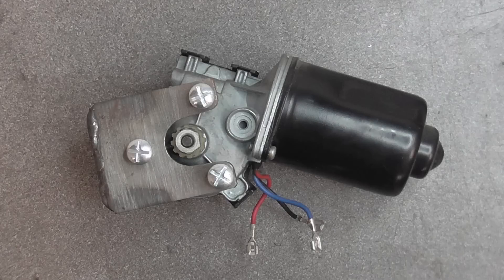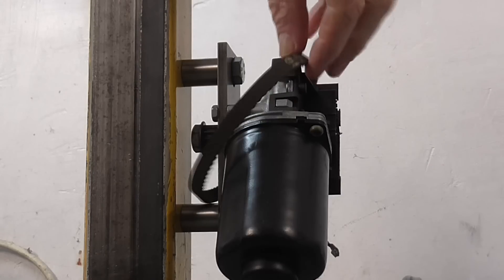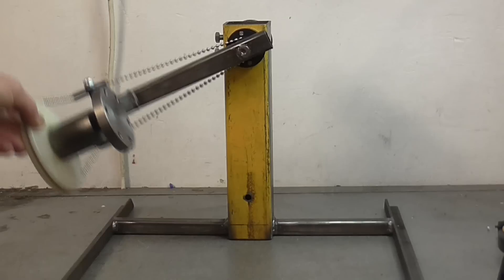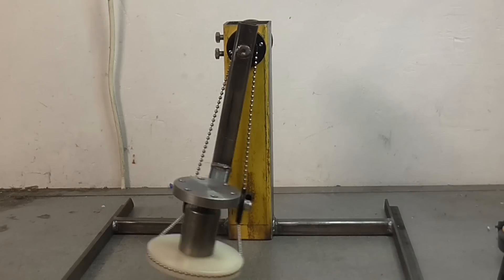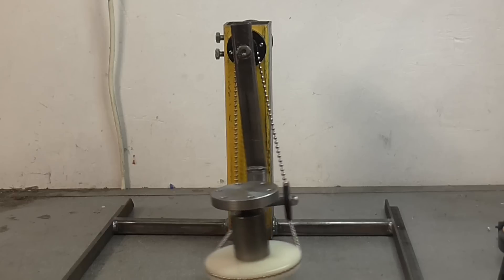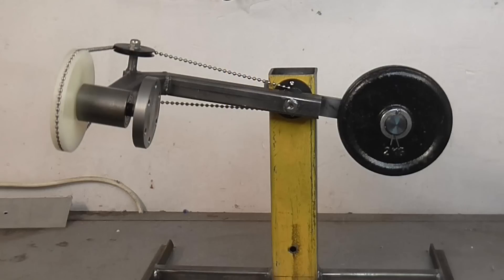I'm going to use a car windscreen wiper motor to drive the arm through a toothed belt and pulleys. But first, as you can see, the arm is quite unbalanced. I'm going to add a counterweight to balance it. This will reduce the load on the motor.